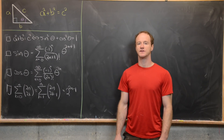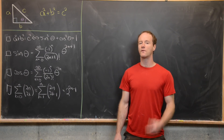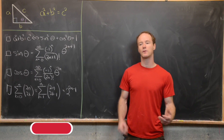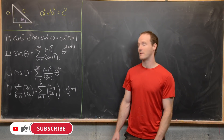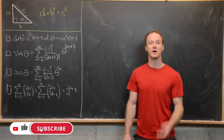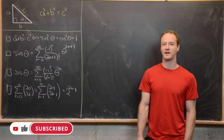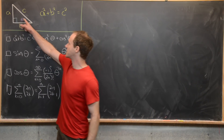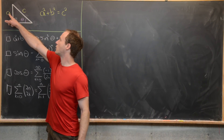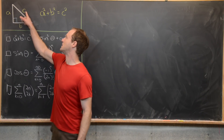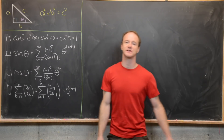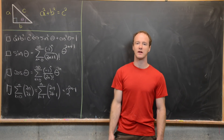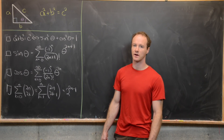This is part of the overkill series where we use overpowered tools to prove simple or well-known facts from mathematics. Here we're going to look at the Pythagorean theorem. That says that if we've got a right triangle with side lengths a and b, hypotenuse length c, then a squared plus b squared equals c squared.